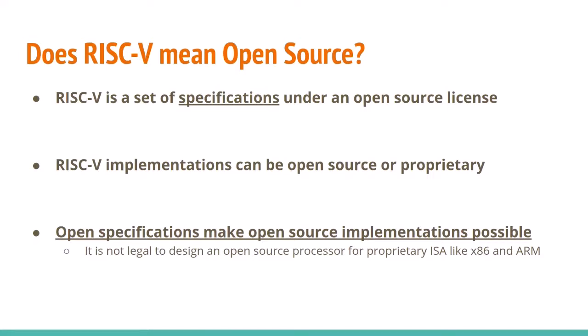People sometimes ask: is RISC-V an open source processor or CPU? That's not quite right. RISC-V is just a set of specifications under an open license — RISC-V implementations can be either open source or proprietary. But open specifications make open source implementations possible. We can't have an open source processor for a proprietary ISA like x86 or ARM, so RISC-V being open makes it possible to have open source processors.